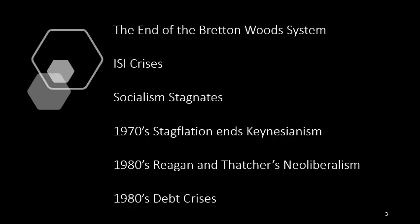This is just an outline of the lecture. We're going to have a look at the end of the Bretton Woods system, but also import substitution industrialization or ISI and the crises that those countries fell into. I'm going to look at how socialism stagnated and the stagflation that ends Keynesianism in the 1970s and then Reagan and Thatcher's neoliberalism in the 80s and the debt crises of the ISI countries.